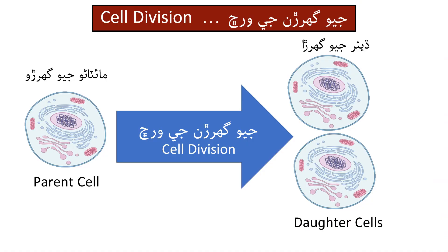In the previous lesson we studied that the cell divides. We learned about the structure of the living cell — that when a cell completes a certain stage, it begins to divide, meaning the parent cell starts to transform into daughter cells.